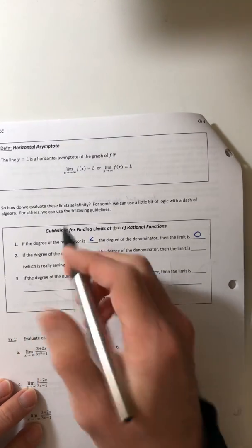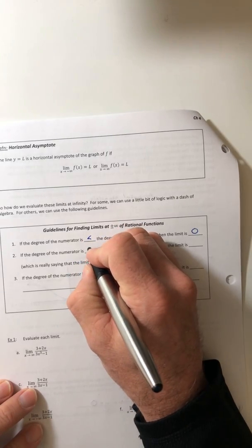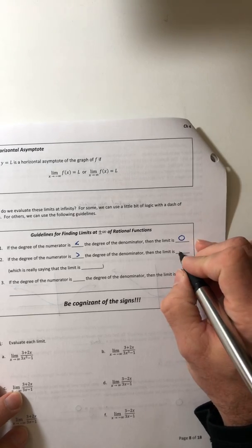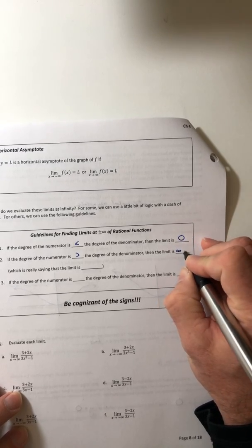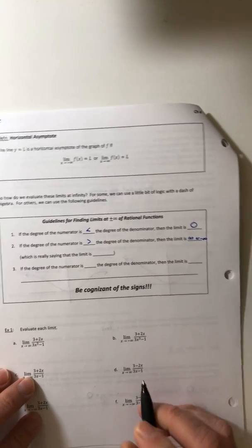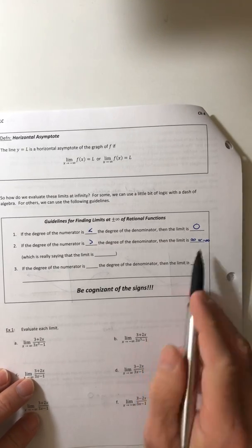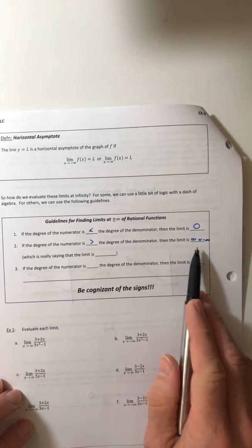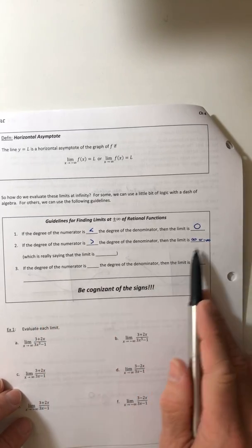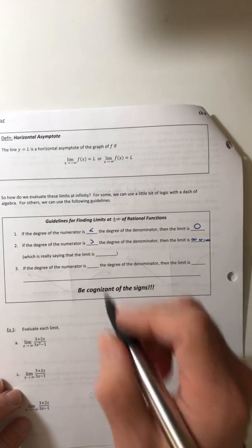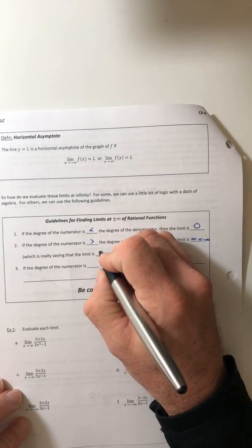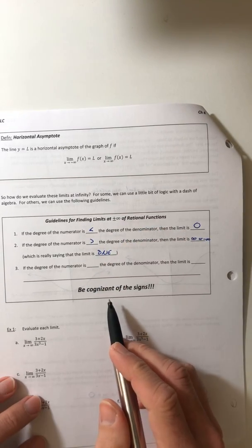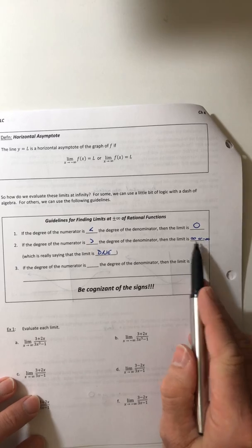So number two, if the degree of the numerator is greater than the degree of the denominator, then the limit is either infinity or negative infinity, one of the two. And we'll look at examples and you'll know which one it will be. But just remember, as a little side note, that if the limit is infinity or negative infinity, that's really saying the limit is DNE or it does not exist. It's just telling you how it doesn't exist.